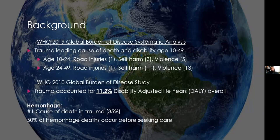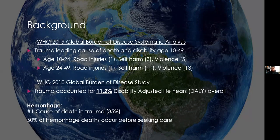Trauma is a huge burden on life across the world. The WHO, every few years, produces a large epidemiologic study involving hundreds of countries to find what is causing the most suffering to humanity. Trauma in young age groups is always number one. From age 10 to 24, road injuries are number one. Self-harm is number three and violence is number five — so in the top 10, three of the losses of life are trauma-related.